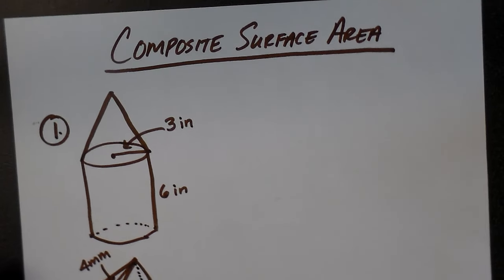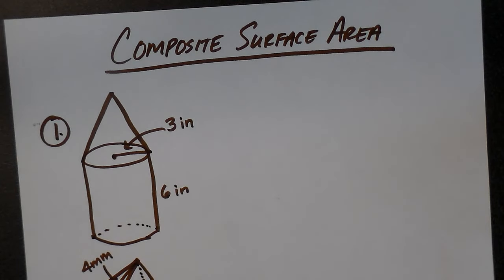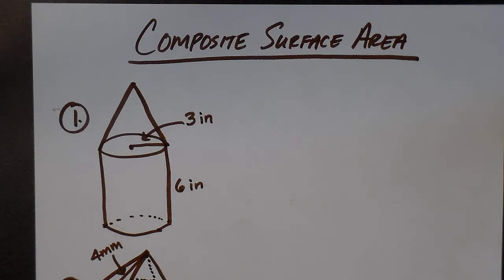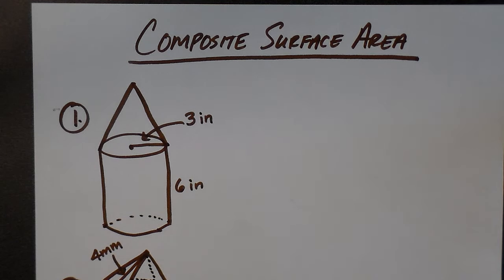Now we're going to look at composite surface area. Composite means a combination — an aggregate, everything together. When you take a composite test, you're looking at different disciplines and subject areas. So when we look at composite surface area, we want to look at the exposed surfaces.